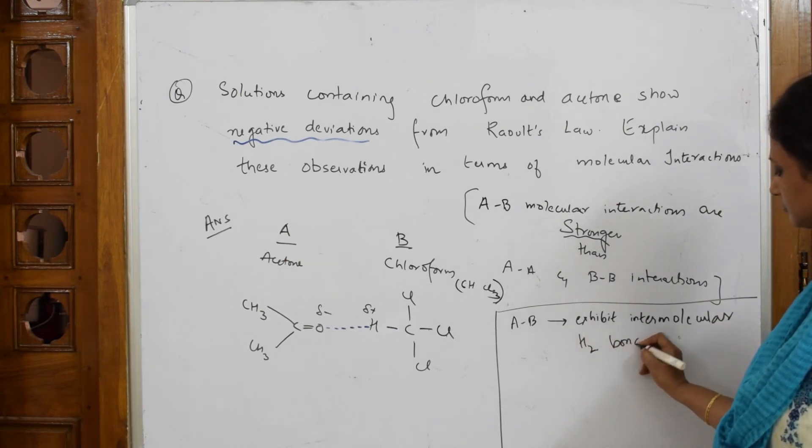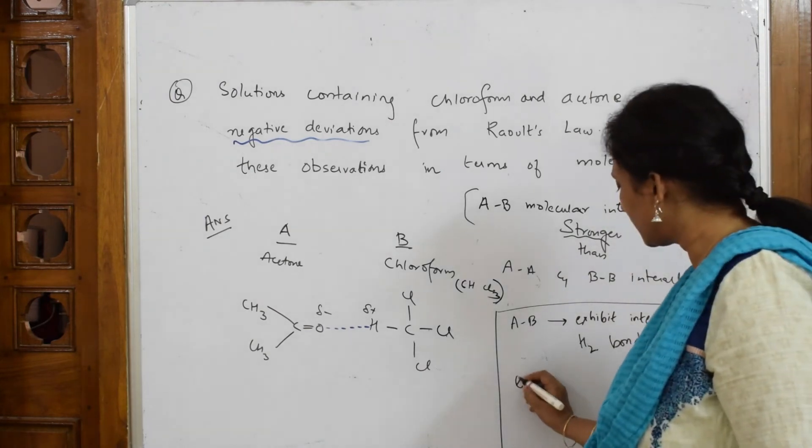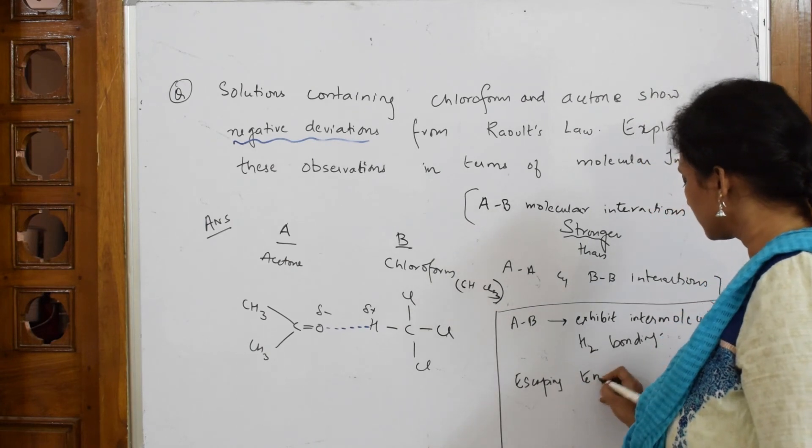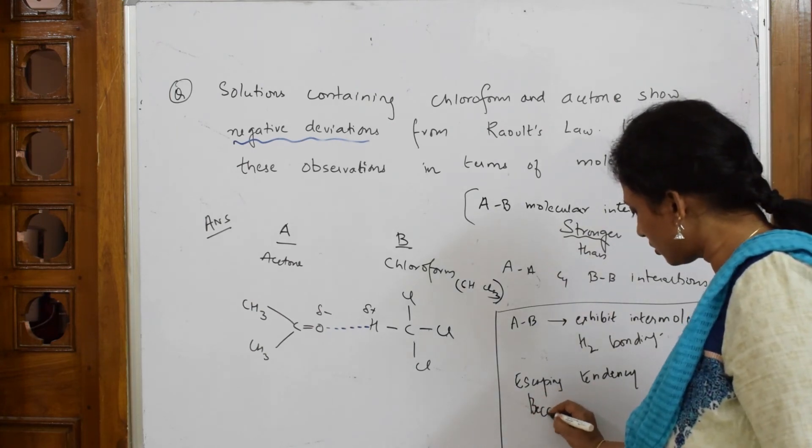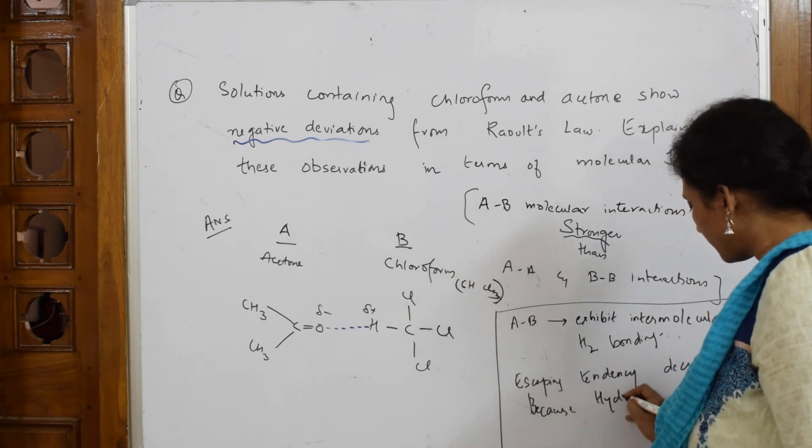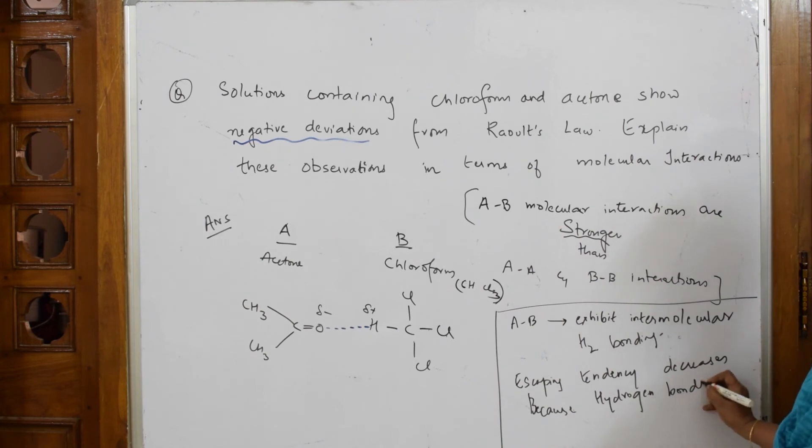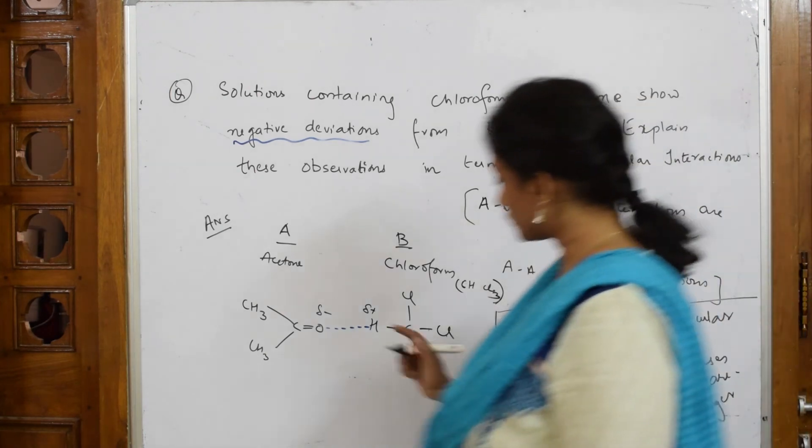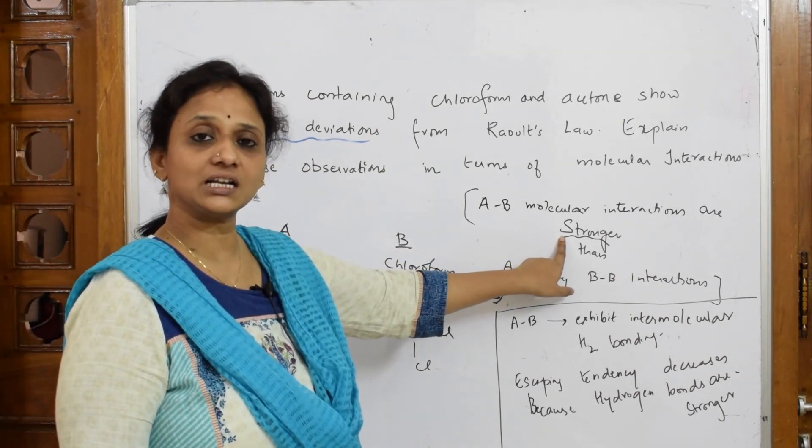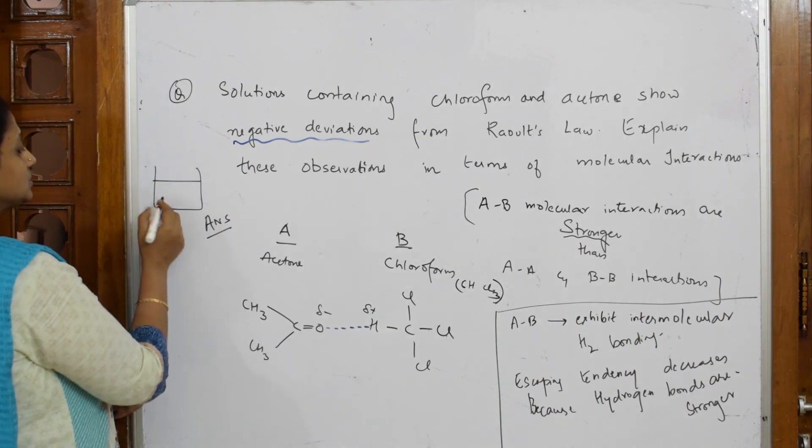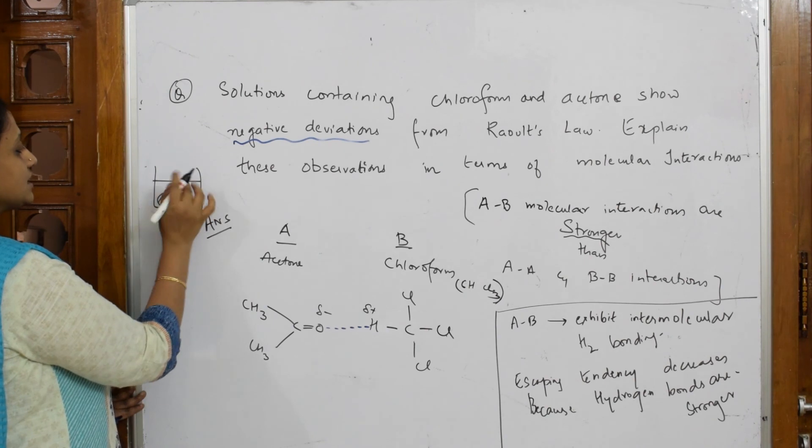So when they exhibit intermolecular hydrogen bonding, escaping tendency decreases. Why? Because hydrogen bonds prevent them - hydrogen bonds are stronger. First of all, that is important - because hydrogen bonds are stronger, it prevents both these molecules to break and then vaporize. That's why I said this stronger interaction is not allowing it to escape from the beaker. This is your A-B - this is your strong interaction. If it will not escape, that escaping tendency is difficult.